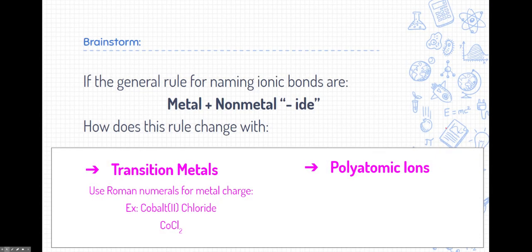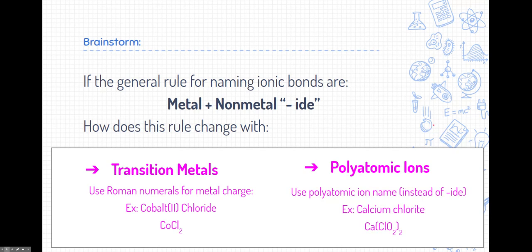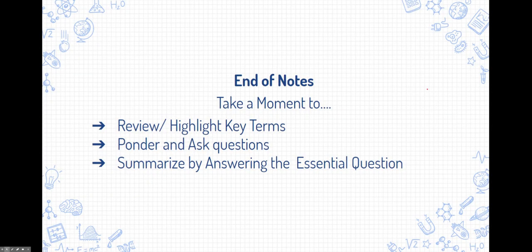All right. Last thing, if the general rule for naming ionic bonds are metals and then non-metals and typically ending in ide, how does the rule change with polyatomic ions? Well, polyatomic ions, you just use the name given to you on the periodic table, whether it be the first thing in the compound or the last thing in the compound. Some polyatomic ions do include the suffix ide, but many of them end in other things like ate, or ite. All right, that leads us to the end of the notes. This is a good time to review and highlight key terms, ponder and write some questions down and try to figure out the answers to those questions, and then don't forget to summarize and answer that essential question. Good luck!